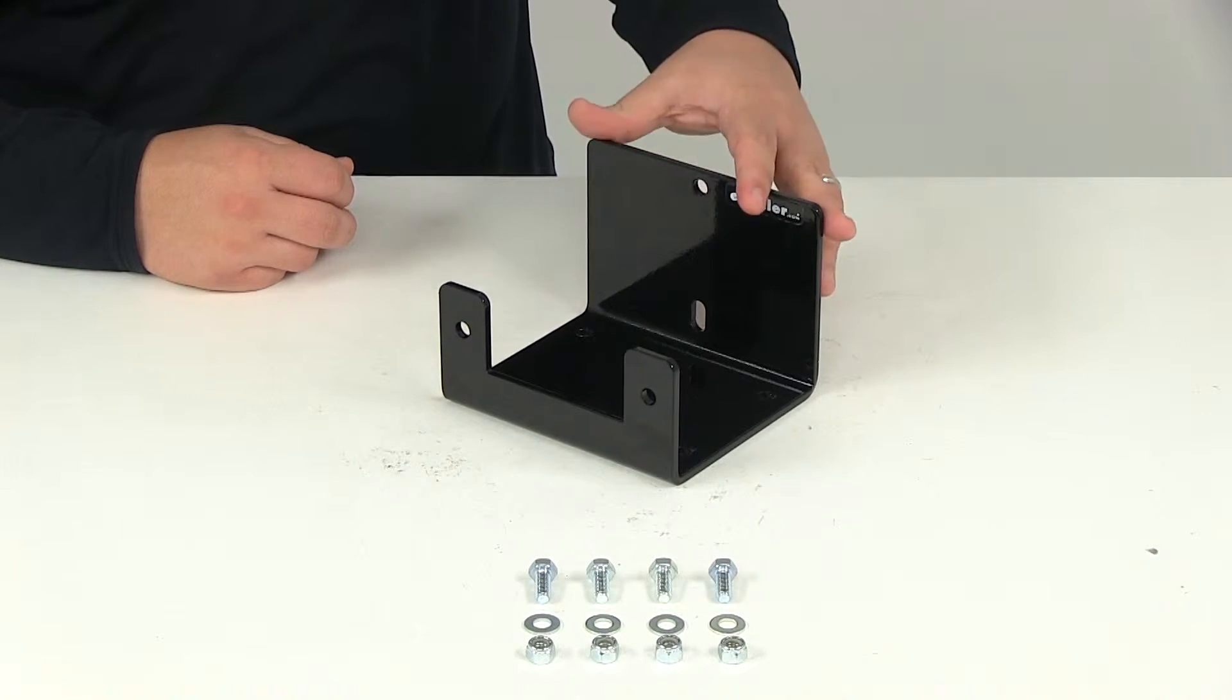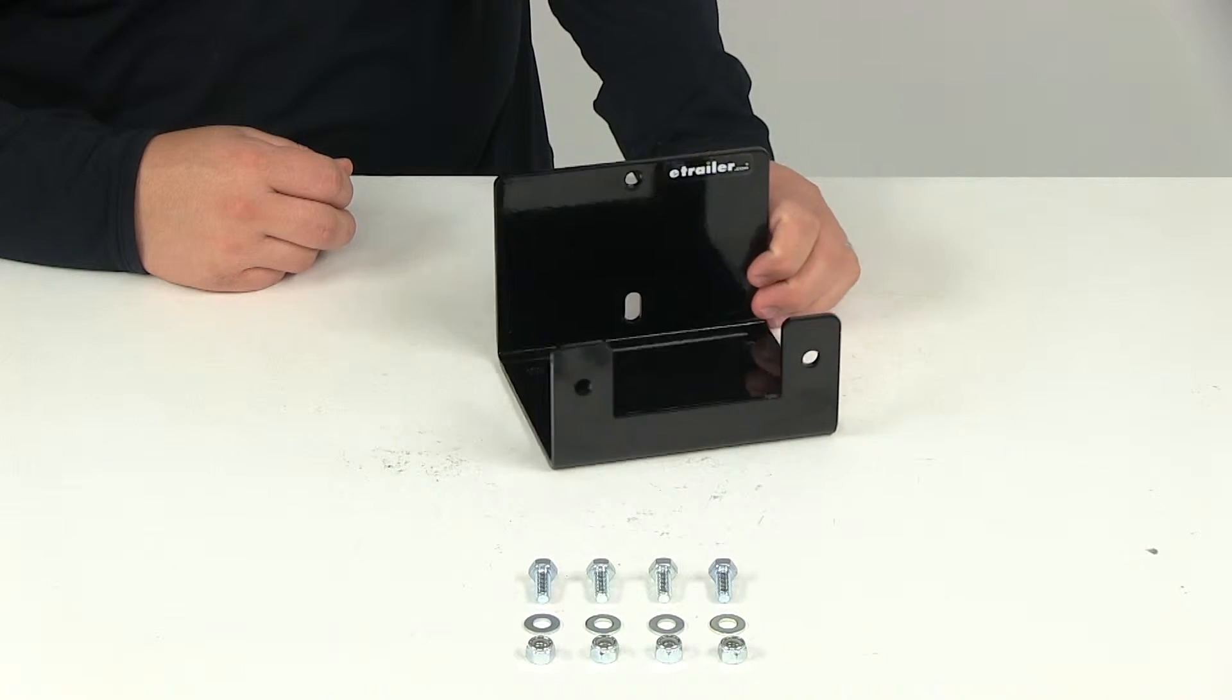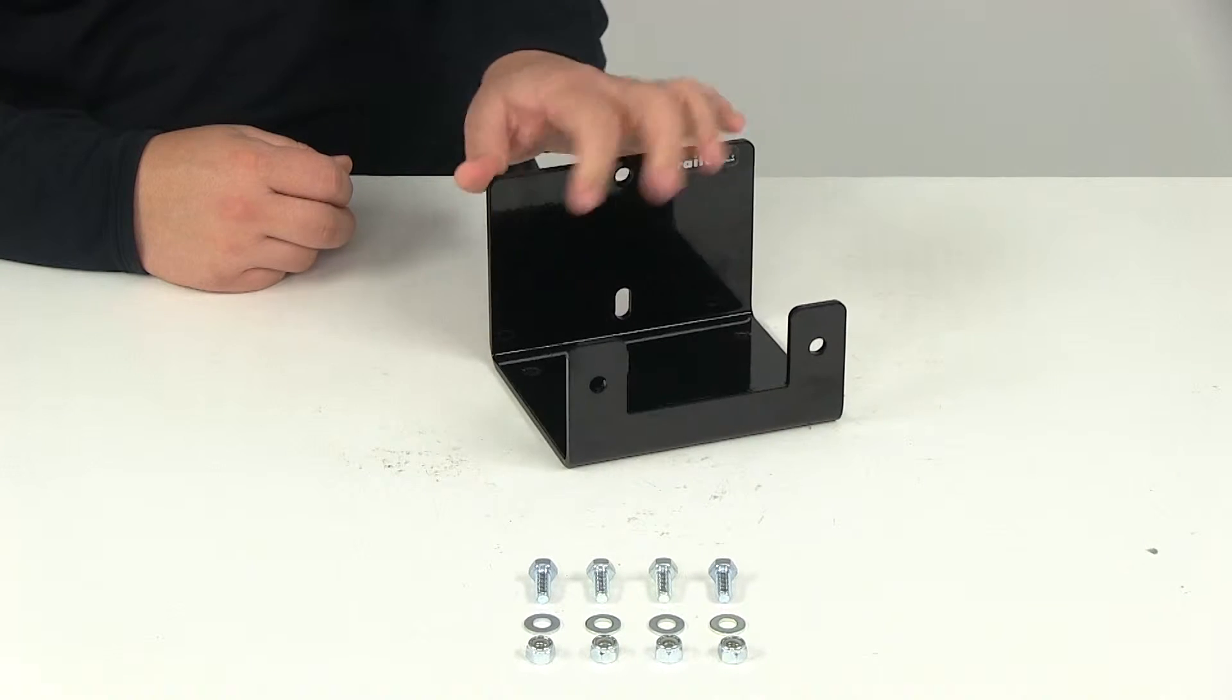The custom bracket will mount your winch onto the front of your ATV. This will accommodate Bulldog 2,000 pound to 3,500 pound winches. The roller fairlead and the winch are not included with this part number.